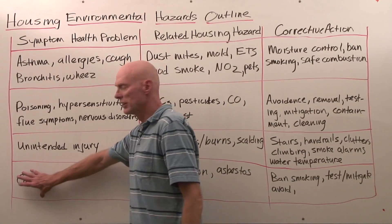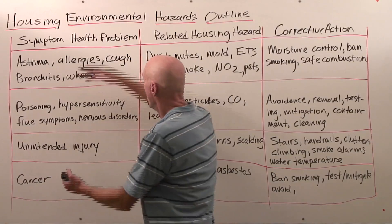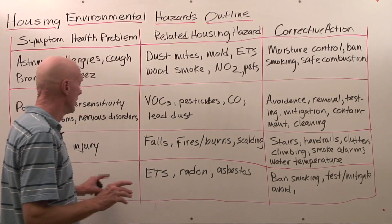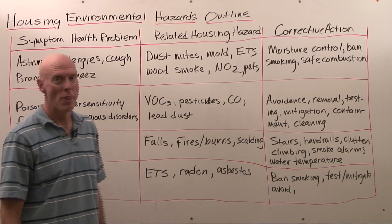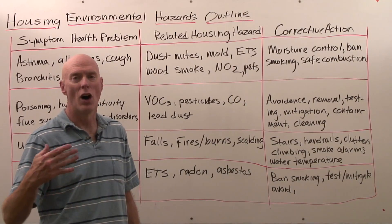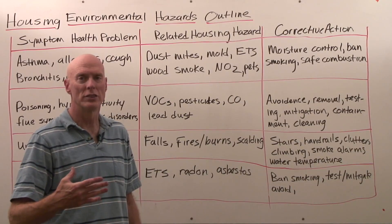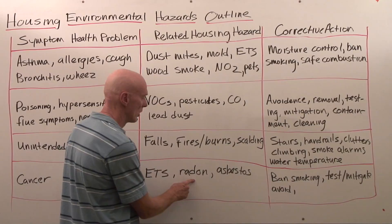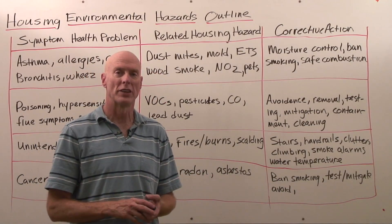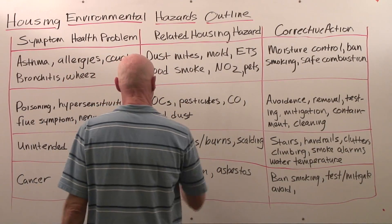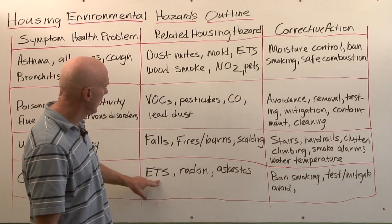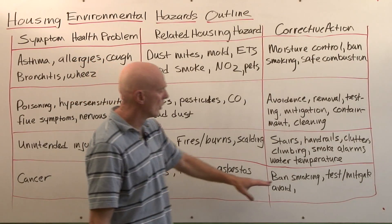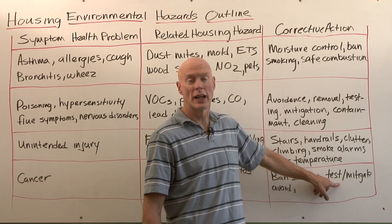Cancer is less immediate but still a concern, as it takes a long time to develop. We do have important carcinogens in our buildings. First, environmental tobacco smoke — something like 60% of people in the United States have traces of it in their blood. Radon is one of the leading causes of lung cancer, just after tobacco smoke. Asbestos-containing materials are common in homes, and asbestos is a known carcinogen. VOCs are also carcinogens. To mitigate: ban smoking indoors, and for radon, test and mitigate if necessary.